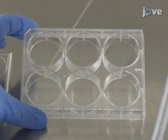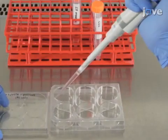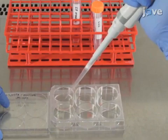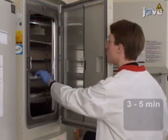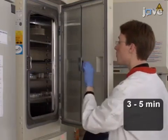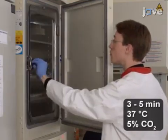Aspirate the spent medium of the RTTA NGN2-positive hiPSCs and add 1 milliliter of CDS to the cells. Subsequently, incubate the cells for 3 to 5 minutes in a humidified 37 degrees Celsius incubator.